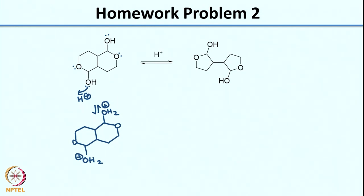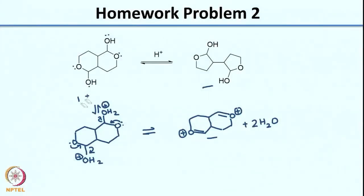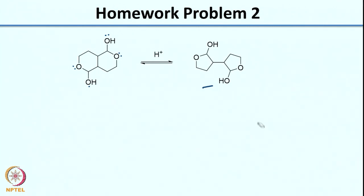Once I do this protonation, the next step you can think of — now what you would end up getting: if you look at this and look at your product, there is no way you can get from this intermediate to your product. So obviously there is some problem here and probably this oxygen is not the source. So let us go back.